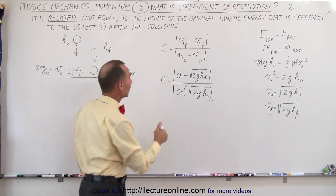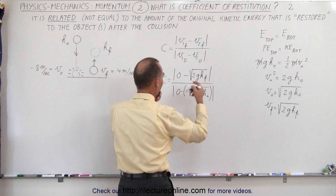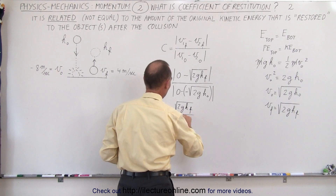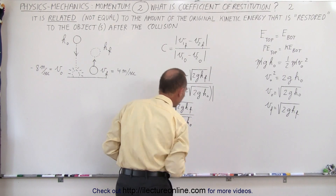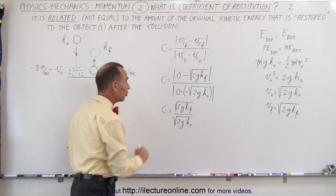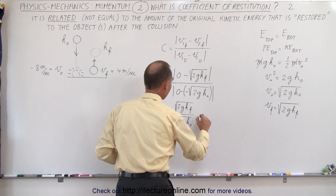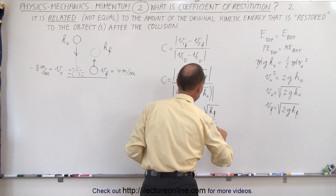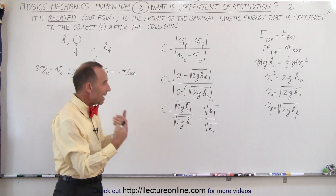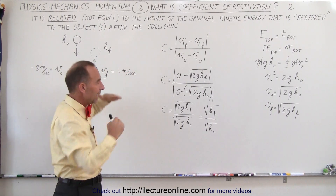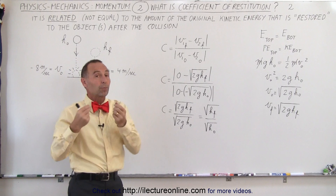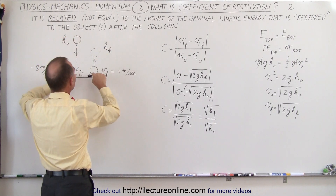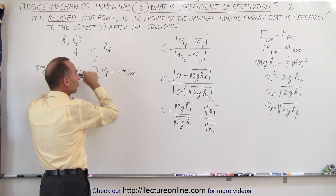Taking the absolute values, the coefficient of restitution equals the square root of 2gh final divided by the square root of 2gh initial. We can cancel the square root of 2g from both numerator and denominator, giving us c equal to the square root of h final divided by the square root of h initial. The heights are proportional to the potential energies at those moments, which in turn equal the kinetic energies just before and just after the collision.